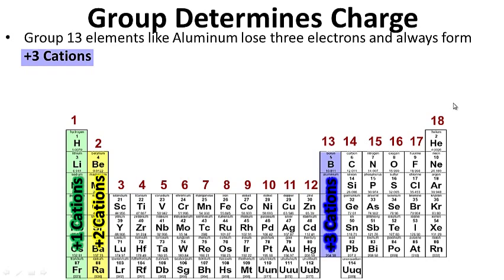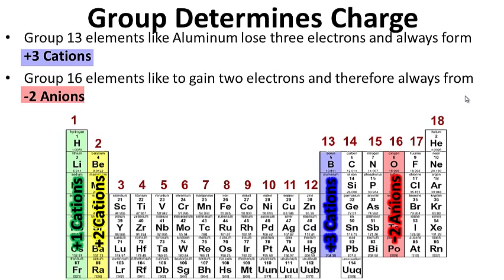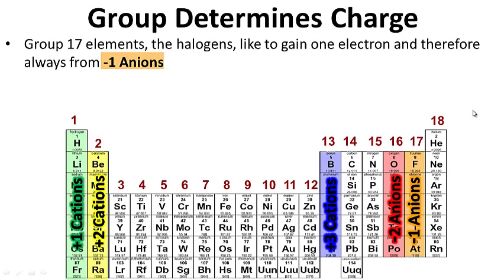Group 13, like aluminum, loses 3 electrons and likes to form plus-3 cations. Over here in group 16, elements actually gain 2 electrons and therefore always form minus-2 anions. And finally, over here in group 17, the non-metals — the halogens — like to gain 1 electron and therefore always form minus-1 anions, negative ions.